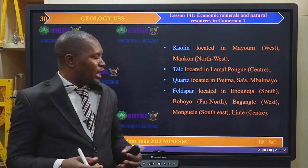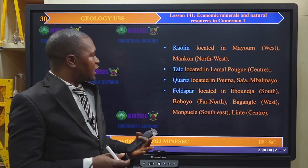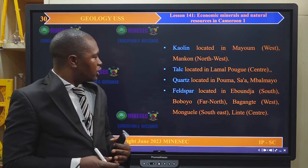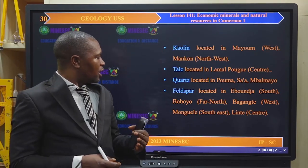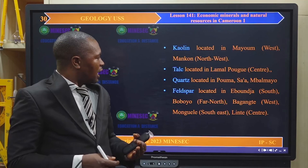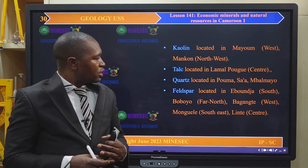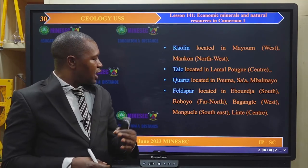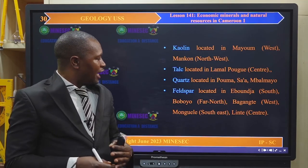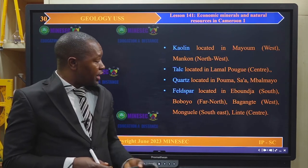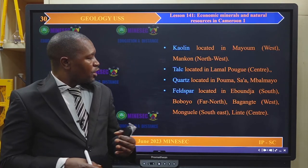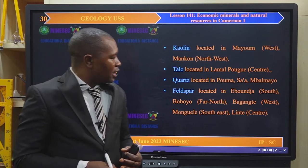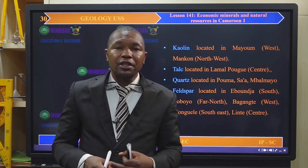Feldspar is located in Ebonja in the south, Boboyo in the far north, Mbangante in the west, Muguele in the southeast of the littoral region, and Lingde in the center region.